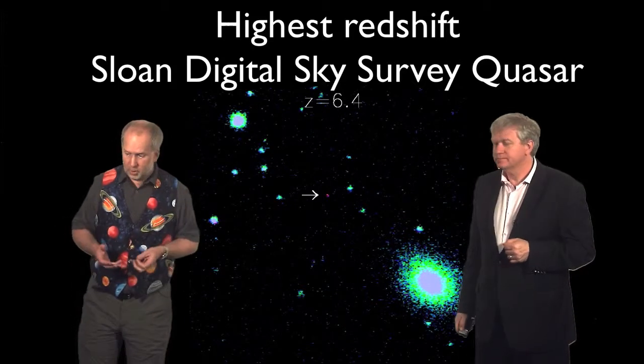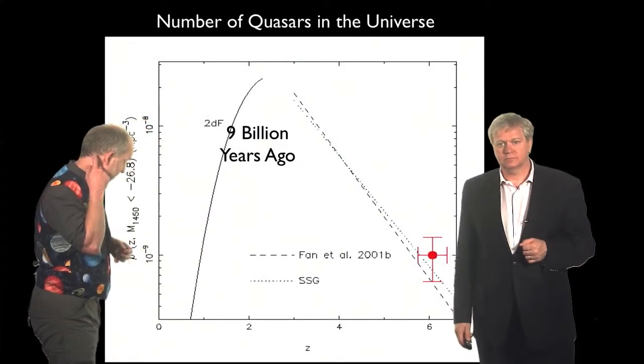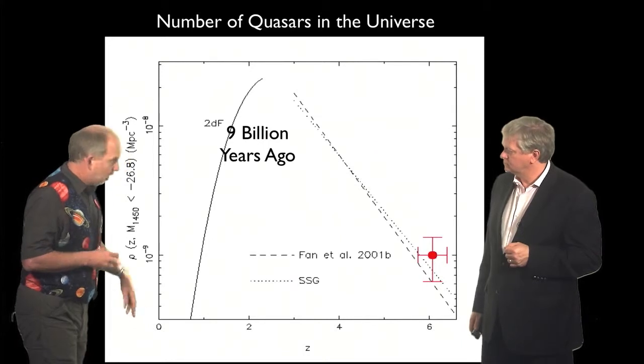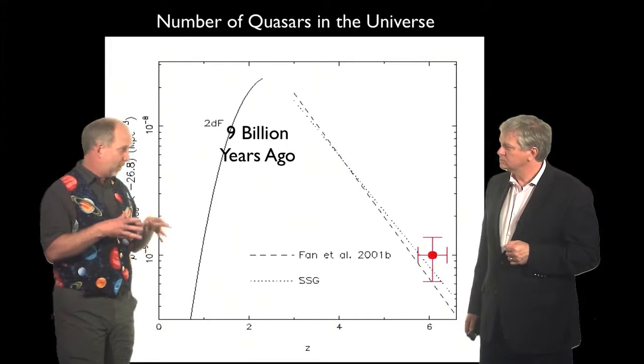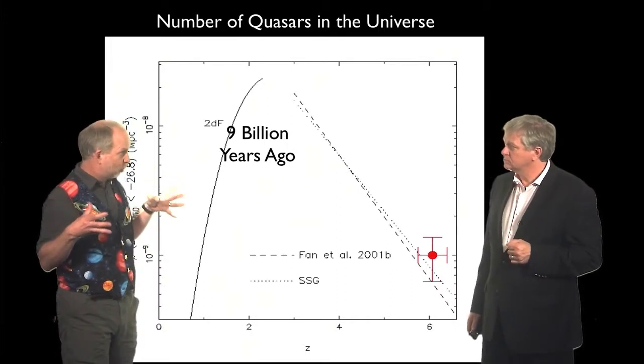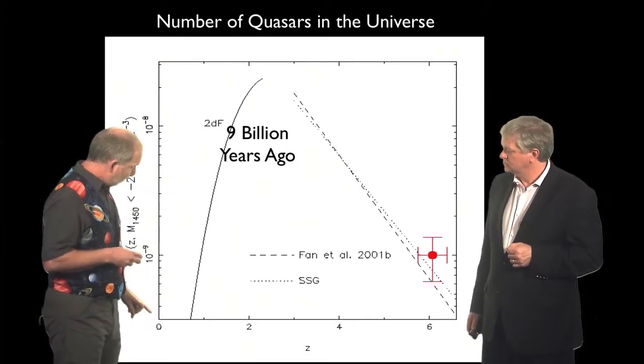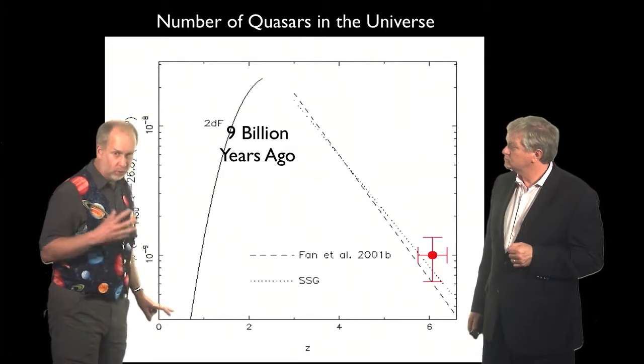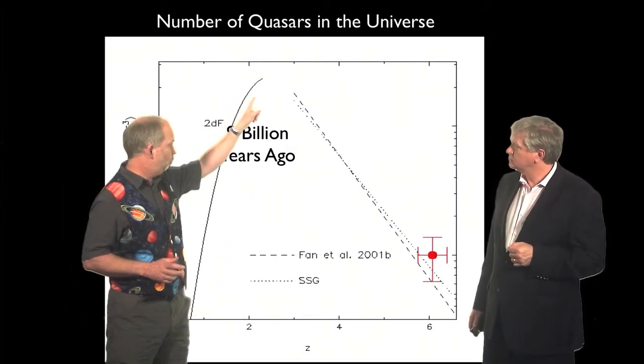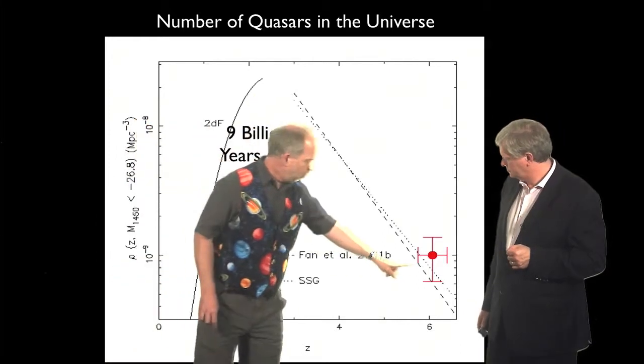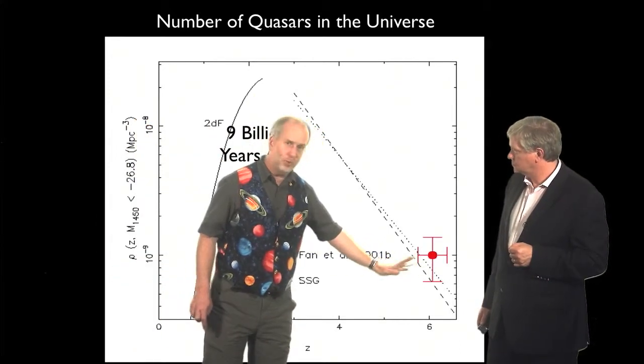Well, they plotted the number of quasars versus time, versus red shift. You have to correct for the fact that space is expanding. This is, after you correct for that, how many quasars there are per what would be a unit volume today, what's called a co-moving volume. And you find there aren't very many quasars today, as we talked about earlier. There are a lot of quasars out at about a red shift of two. But there really weren't very many out at red shifts of five or six or so,